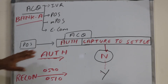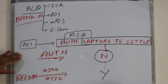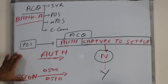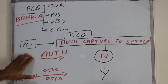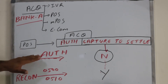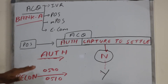When the acquiring bank receives a transaction or a reconciliation, there are two processes we already discussed: one is the authorization and the other is the reconciliation. How the acquiring bank internally handles these two, we have already seen.